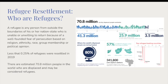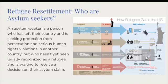Refugees have the right to international protection. Who is an asylum seeker? An asylum seeker is a person who has left their country and is seeking protection from persecution and serious human rights violations in another country, but who hasn't yet been legally recognized as a refugee and is waiting to receive a decision on their asylum claim.